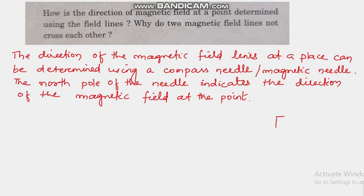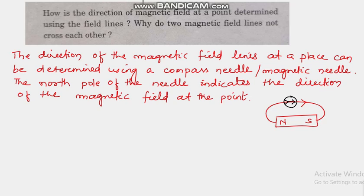It means that if we take a bar magnet — this is the north and south pole of the bar magnet — if we keep a magnetic needle or a magnetic compass here, then this would be the direction of the north pole. This would indicate to us in which direction the magnetic field is going. This is the first part.